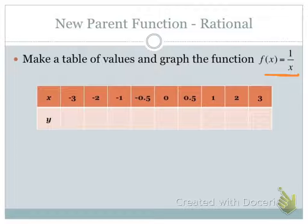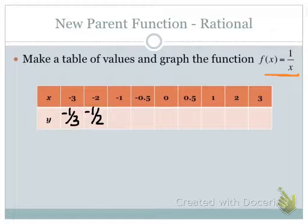If we take a look at some of the values we would get in this function: if I put in negative 3 for x, I get negative one-third. If I put in negative 2, I get negative one-half. If I put in negative 1, negative 1 is my answer. And if we put in negative one-half, we get negative 2. Positive 0.5 gives us positive 2, positive 1 gives positive 1, positive 2 gives one-half, and positive 3 gives one-third.